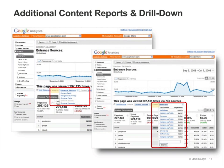You can use the Analyze drop-down menu to view additional reports, such as entrance sources and entrance keywords. The Content drop-down menu allows you to select or search for specific pages to analyze.